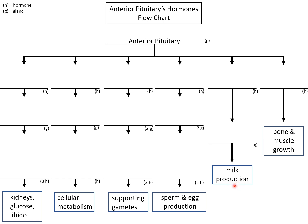Let's start with a simple one — milk production. If we want milk production, what hormone is released by the anterior pituitary that will ultimately lead to that? I'm looking for the hormone — H stands for hormone and G stands for the gland that hormone is going to act on. Our anterior pituitary is going to release prolactin. Prolactin's target gland is the mammary glands, and once acted on by prolactin, we end up with milk production.